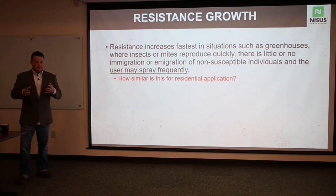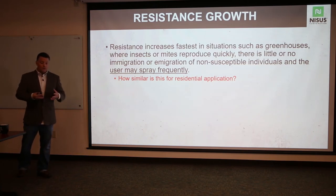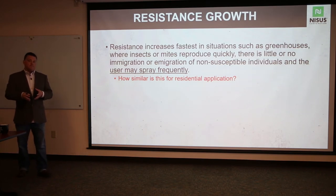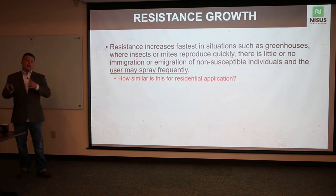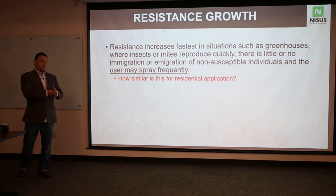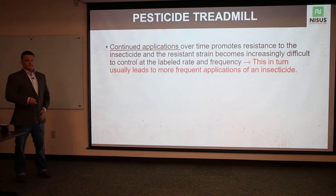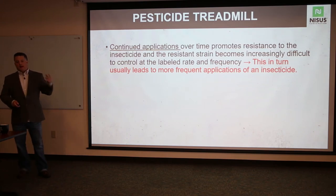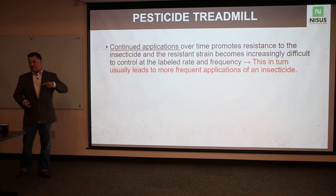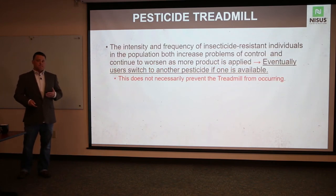Resistance increases fastest in small environments. If you're doing bed bug work and the homeowner hasn't prepped the room or cleaned up, you'll have problems controlling the population. This is similar to a commercial kitchen — if the kitchen doesn't have a sanitation program, you can spray liquid insecticides all day long and not control a fly issue. As continued applications accumulate, this leads to more frequent applications: spraying once a month, then once every three weeks, then once every two weeks, then once a week.